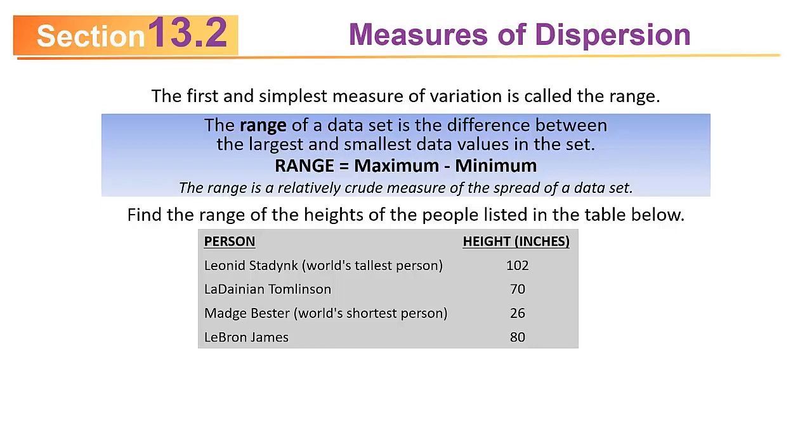Here's an example that's sort of aged - a list of the heights in inches of four different people: the tallest person in the world, the shortest person, LeBron James, and LaDainian Tomlinson. The range of that data set would be the maximum minus the minimum. In this case, 102 minus 26, which is 76 inches, about 6 feet 4 inches.